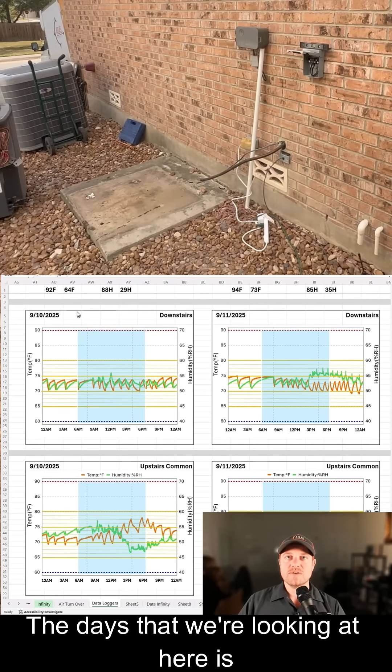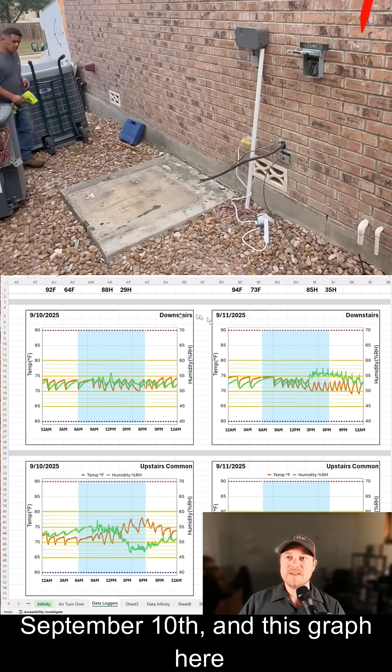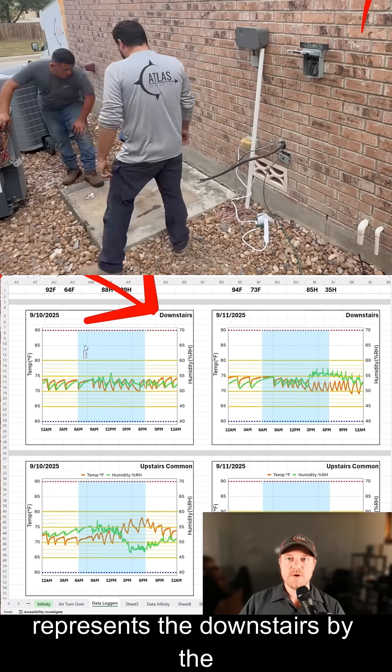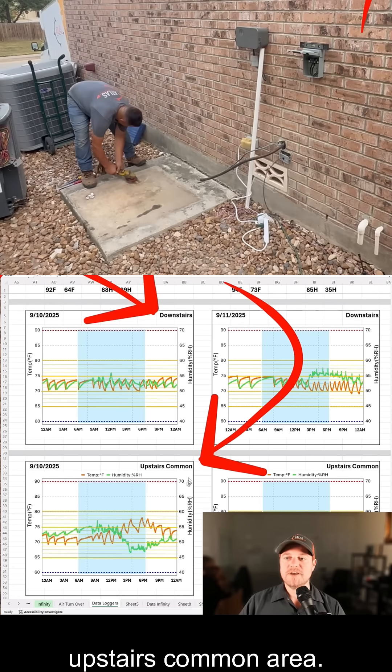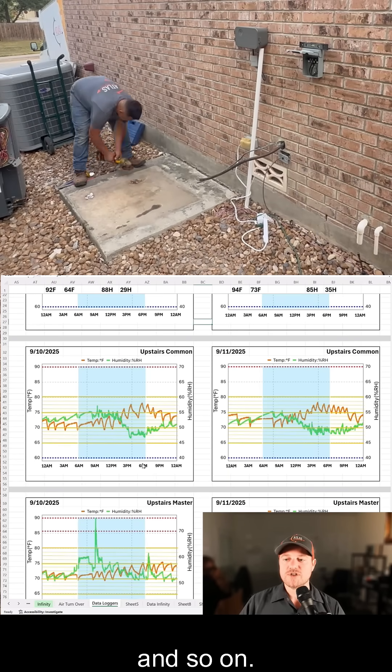So let's go back to our spreadsheet. The days that we're looking at here is September 10th, and this graph here represents the downstairs by the thermostat, and the one under is the upstairs common area, and so on.